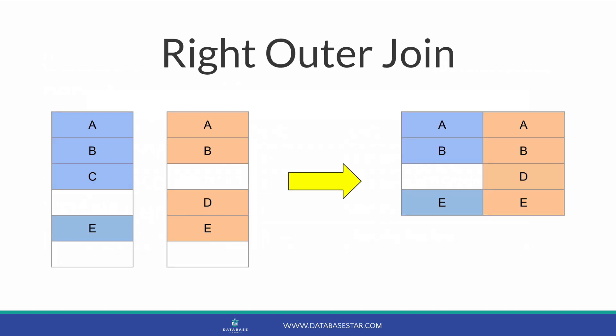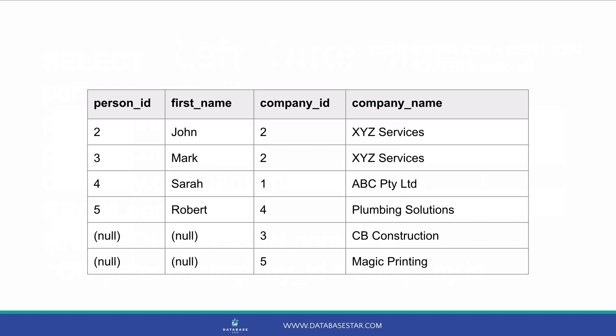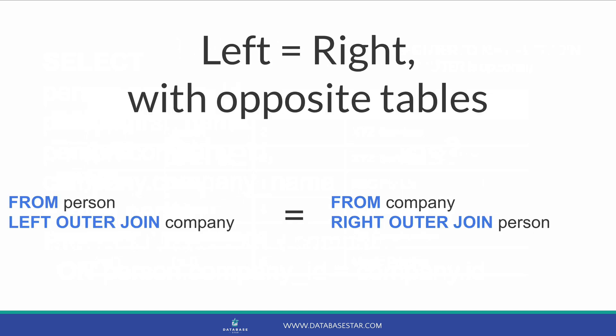Another type of join is a right outer join. This is the same as a left outer join, except the tables are referred to in the opposite way. All records from the right table are shown, and if there is a matching record in the left table it is shown; if not, a null value is shown. A query using right outer join or right join will show all company records and related person records, but null for person fields if no match is found. I hardly ever use a right outer join because it can be written as a left outer join instead, which I find easier to understand, but you may find times where you need to use it.